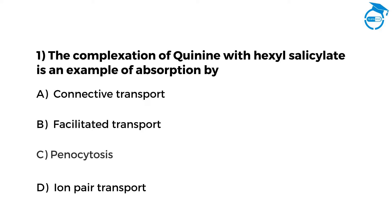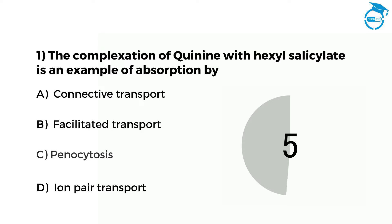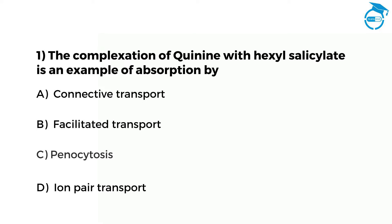The first question is: the complexation of quinine with hexyl salicylate is an example of absorption by — option A connected transport, option B facilitated transport, option C pinocytosis, option D ion pair transport. You have got 7 seconds. The correct option is D, that is ion pair transport.